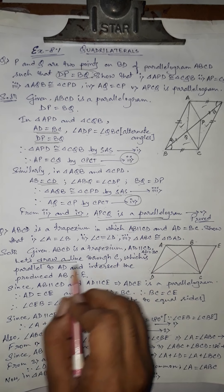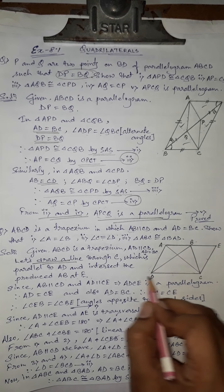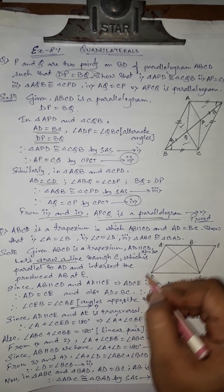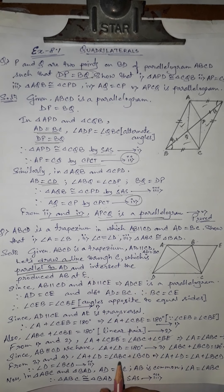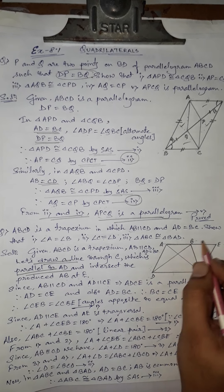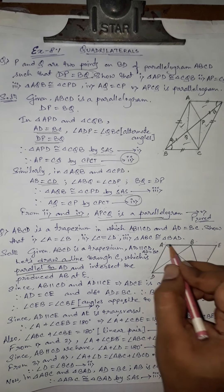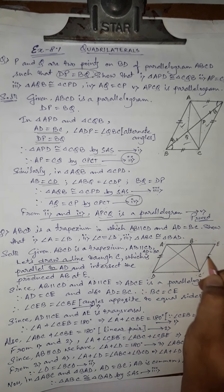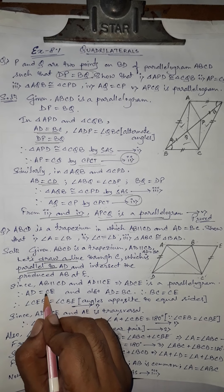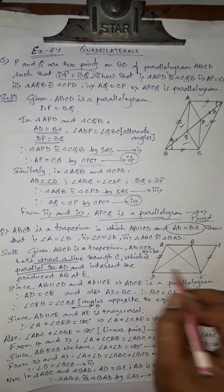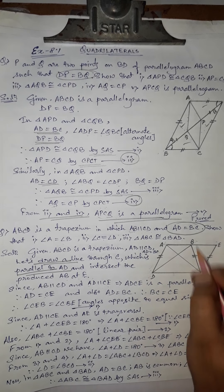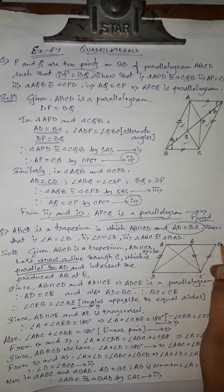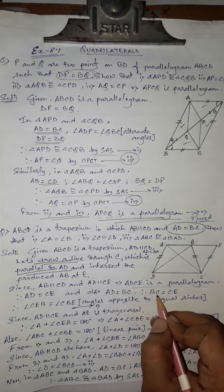Since AB is parallel to CD, AE is also parallel to CD. By construction, AD is parallel to CE. So when the opposite sides are parallel, ADCE is a parallelogram. Since ADCE is a parallelogram, its opposite sides are equal, so AD equals CE. Also from the given, AD equals BC.